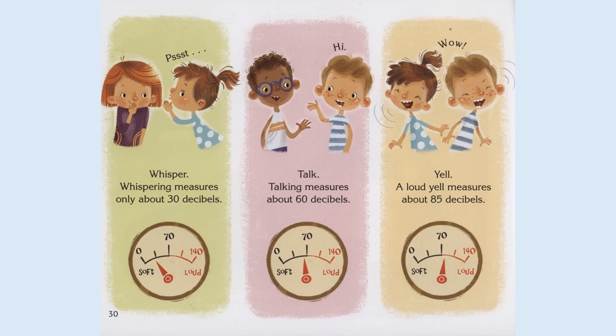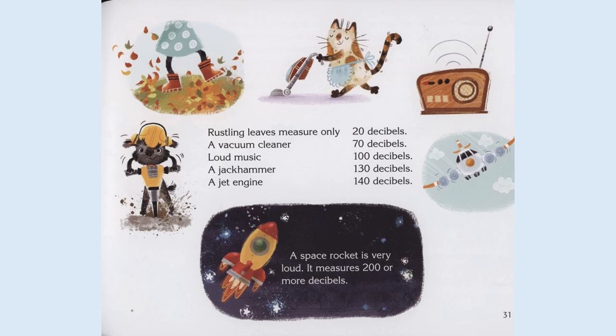Whisper — whispering measures only about 30 decibels. Talk — talking measures about 60 decibels. Yell — a loud yell measures about 85 decibels. Rustling leaves measure only 20 decibels. A vacuum cleaner, 70 decibels. Loud music, 100 decibels. A jackhammer, 130 decibels. A jet engine, 140 decibels. A space rocket is very loud — it measures 200 or more decibels.